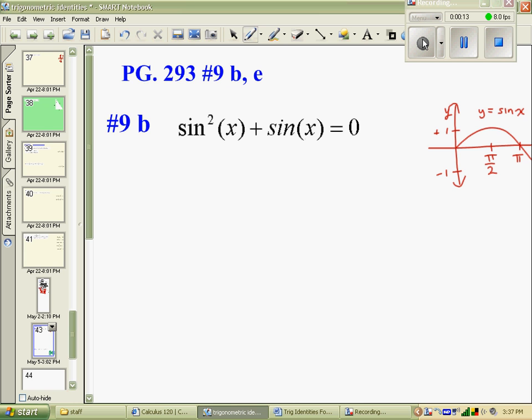So we have sine squared of x plus sine x equals 0. I'm going to common factor a sine x out, which would leave sine of x plus 1 behind. So now I have two different brackets multiplying to give 0. I would know that the first has to be 0, or the second bracket has to be 0.